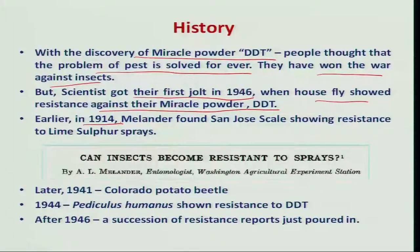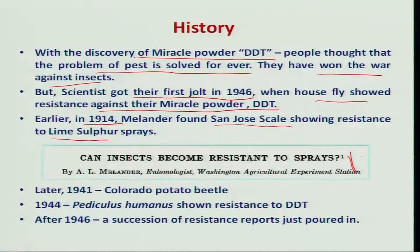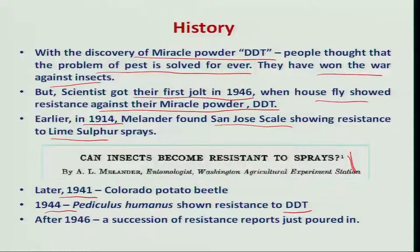Even as far back as 1914, before the synthesis of synthetic insecticides or before understanding the insecticidal property of DDT in 1939, Melander in 1914 noted that the San Jose scale insect had developed resistance to lime sulfur. He wrote an article asking 'can insects become resistant to sprays?' — which at that time nobody gave importance. But later during 1941, the Colorado potato beetle developed resistance, and then a medical pest, Pediculus, showed resistance to DDT during 1944. After 1946 particularly, a series of insects showing resistance to various groups of insecticides started coming in from different parts of the globe.